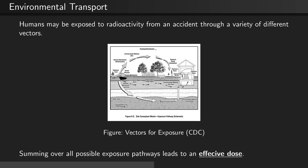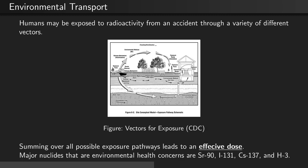Summing over all possible exposure pathways leads to an effective dose. Major nuclides that are environmental health concerns are strontium-90, iodine-131, cesium-137, and tritium, or hydrogen-3.